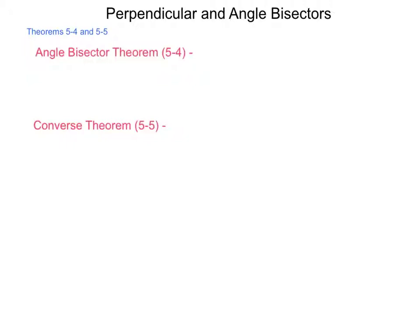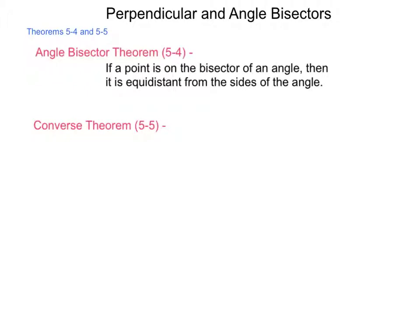Angle bisector theorem states: if a point is on the bisector of an angle, then it is equidistant from the sides of the angle. So, what this would look like is that if I have an angle drawn and a bisector of the angle such that the two parts are congruent, that is, definition of a bisector.